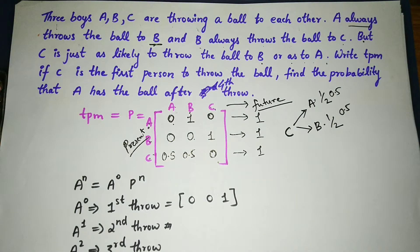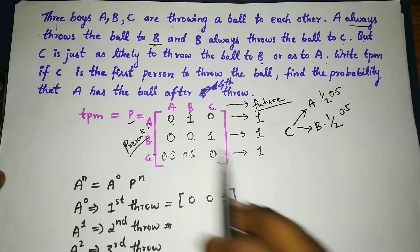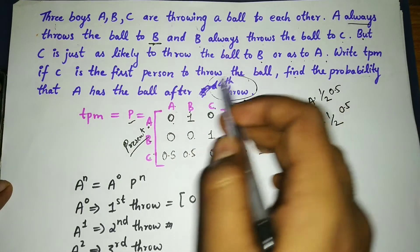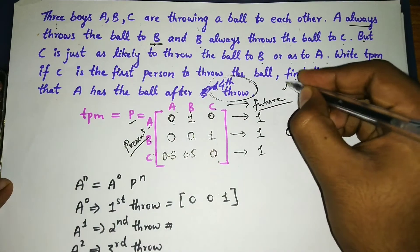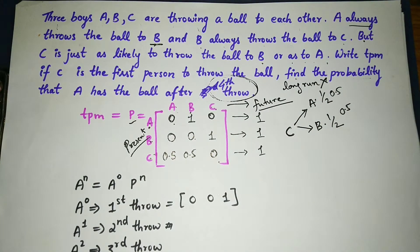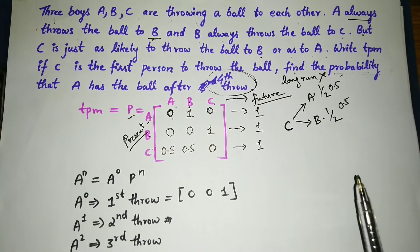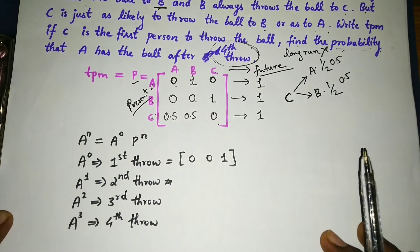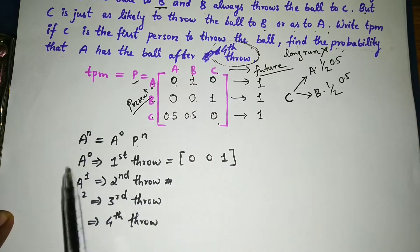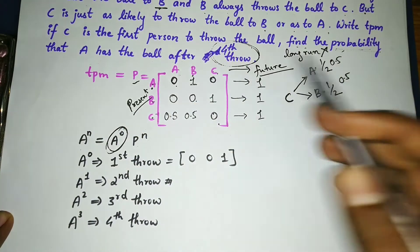We have now formed the TPM — the Transition Probability Matrix. The question asks: find the probability that A has the ball after the fourth throw. There is no need to find the long-run probability. We use the nth-step probability distribution formula: a^n = a^0 × P^n.